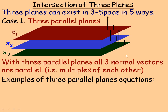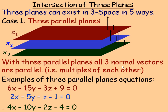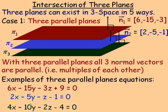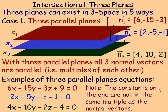In case number one, the three planes could be all parallel. Pi one is the red one, pi two is the blue one, and pi three is the bottom one. If all three planes are parallel, then the three normal vectors are parallel, which means they are multiples of each other. For example, the normal vector for the red plane is (6, -15, -3), for the blue one is (2, -5, -1), and for the green one is (4, -10, -2). The green one is twice the blue one and the red one is three times the blue one. Notice that the constants on the end are not in the same multiples as the normal vectors, which is why they are parallel and distinct — they share no common points.